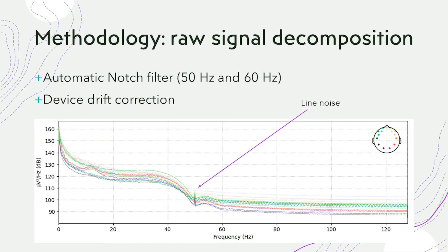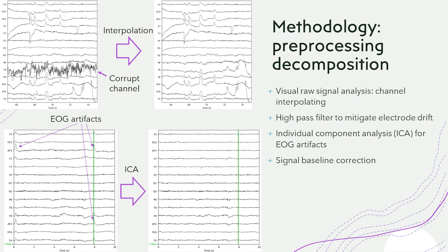The signal from Epoch Plus is not completely raw. The headset applies automatic notch filtering, suppressing the strong noise created by power lines, followed by synchronizing the headset with the recording computer clock, also known as device drift correction. Pre-processing of EEG signal is done in four main steps: the signal is first visualized for detecting any obvious artifacts, such as a corrupted channel, dealt with by interpolating it using adjacent channels. Next, high-pass filtering at 1 Hz is applied to remove electro drift, followed by independent component analysis to remove EOG artifacts, and concluded with baseline correction.